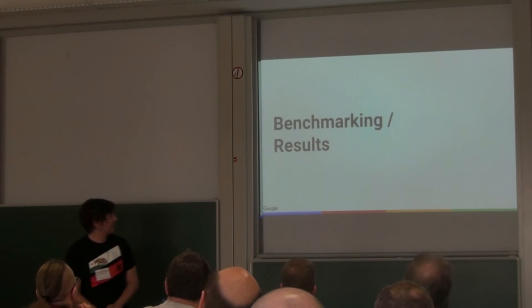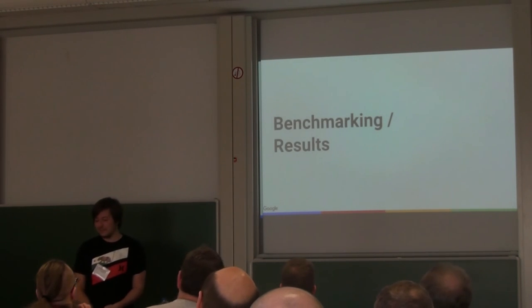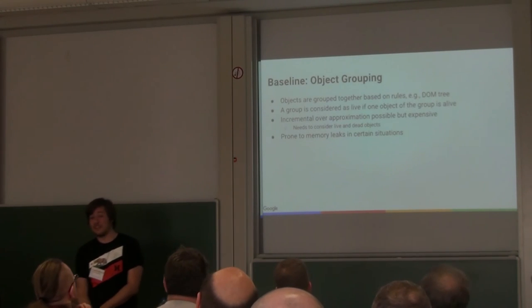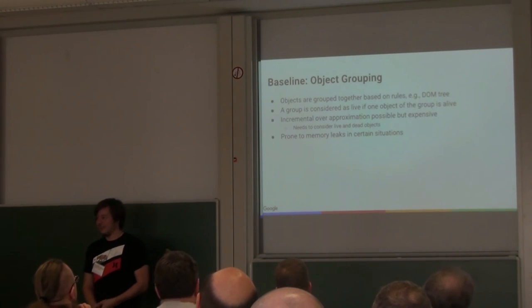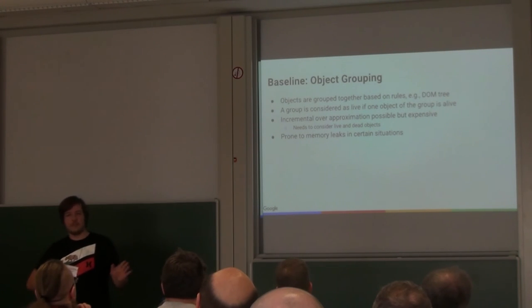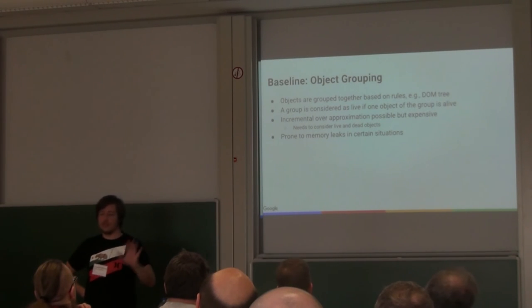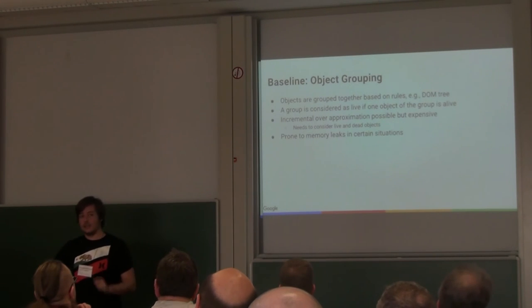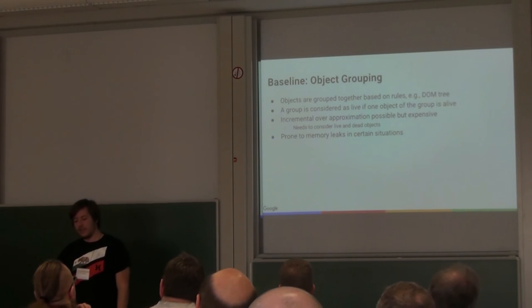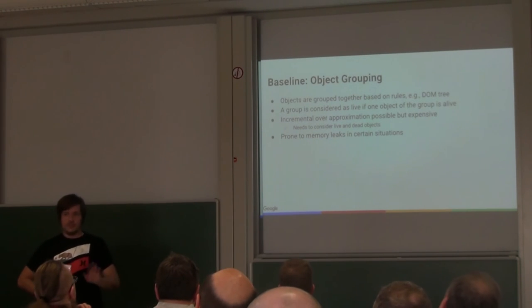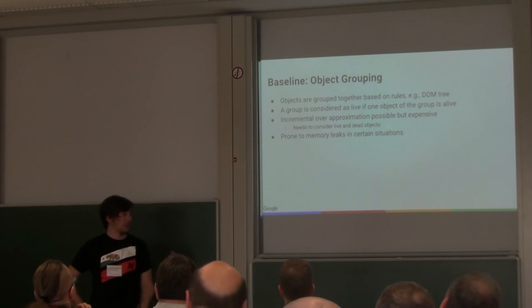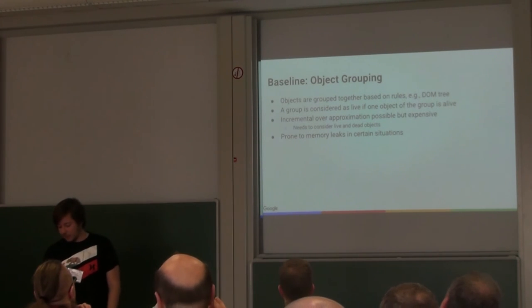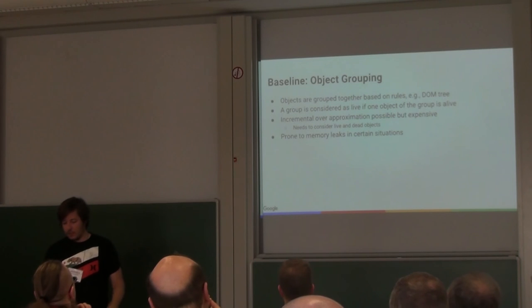Some benchmarking and results. The system that was implemented before is called object grouping. The important thing is that you basically create groups of live objects, but these groups are not sufficient to collect all cycles — you end up still with some memory leaks, and you cannot do it well incrementally. So we got rid of this system. If you're really interested in what was going on there, you can ask me offline.